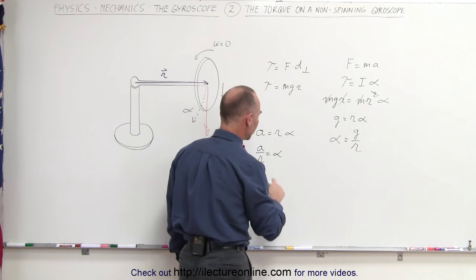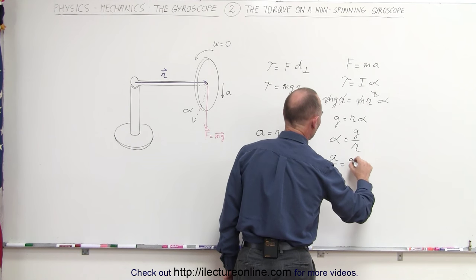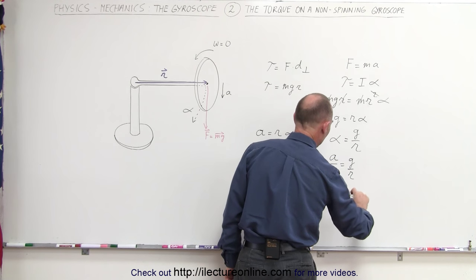Replacing alpha by g over r, because we can say alpha equals a divided by r. Replacing that, we could say a over r is equal to g over r, and so a equals g.